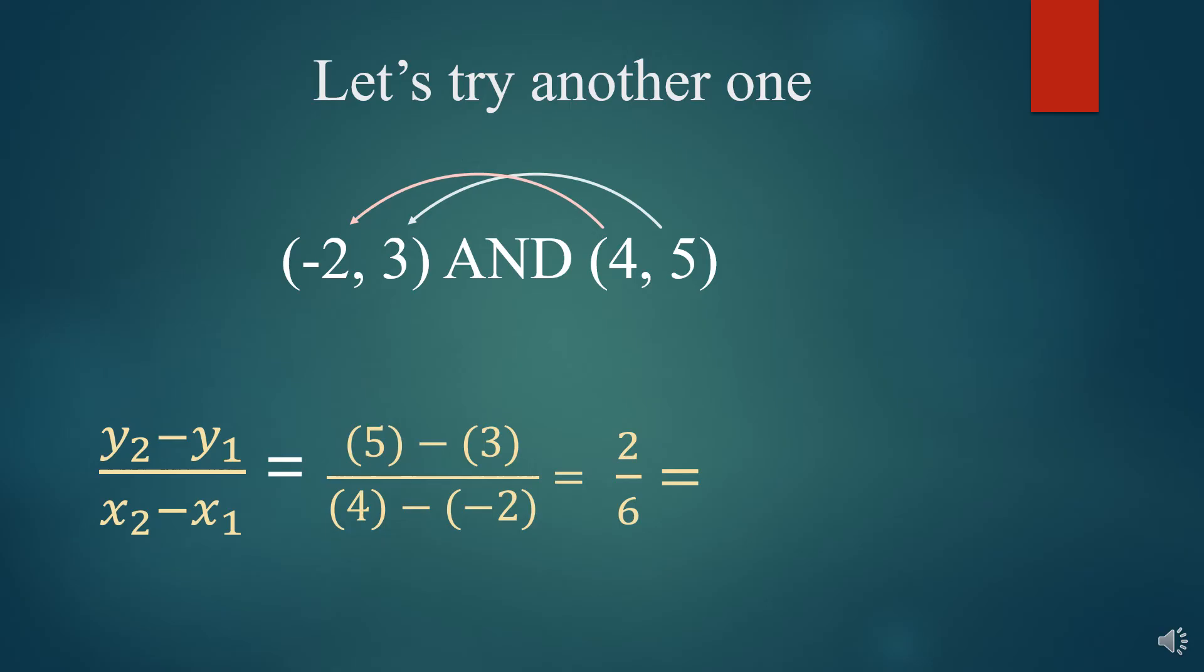And so we get 2 over 6. But you'll notice that 2 over 6 is not simplified. And so we have to make sure that we always simplify it. And we get 1 over 3. And there it is. The slope of our line is 1 over 3.